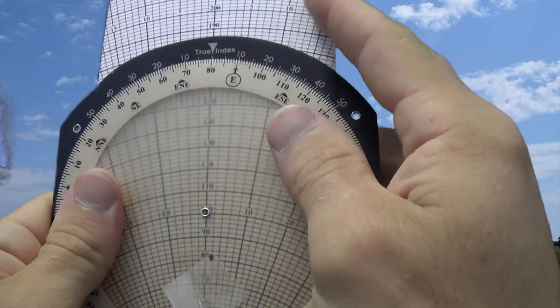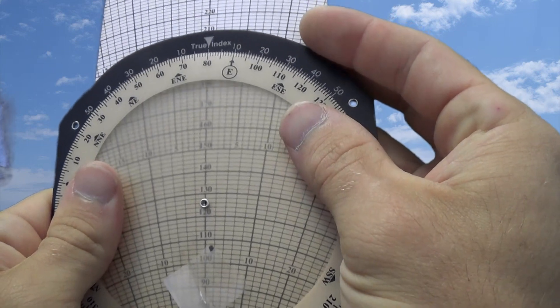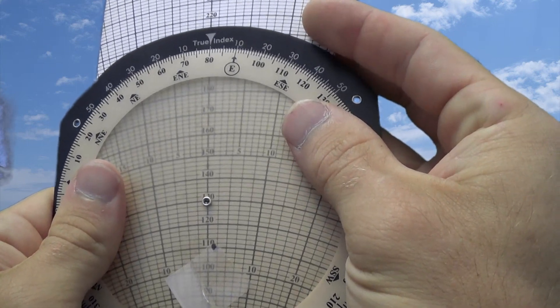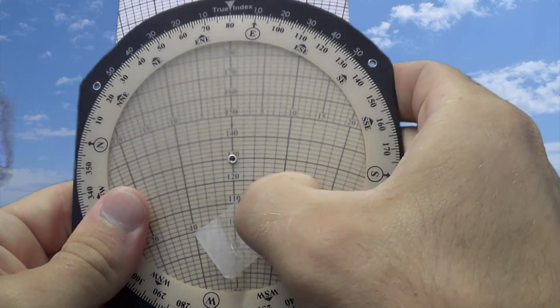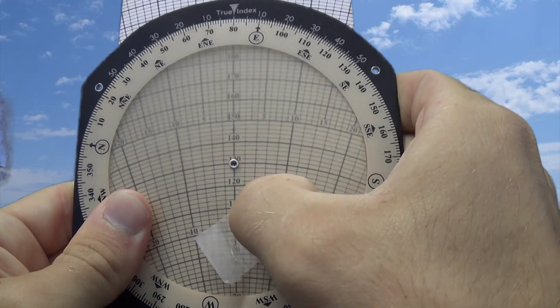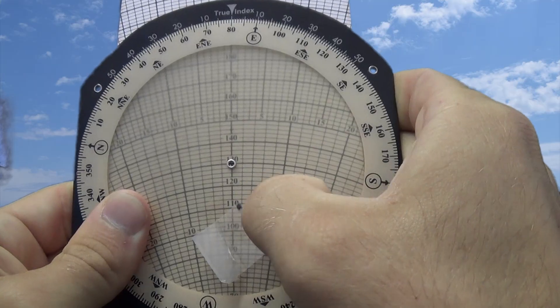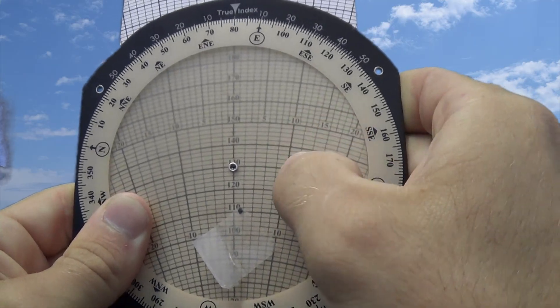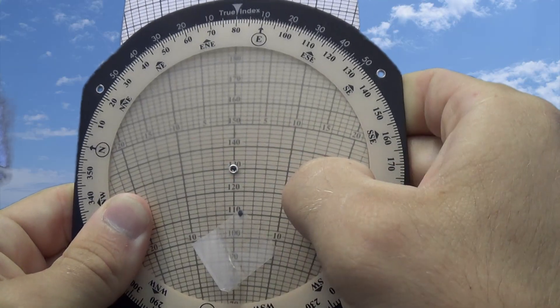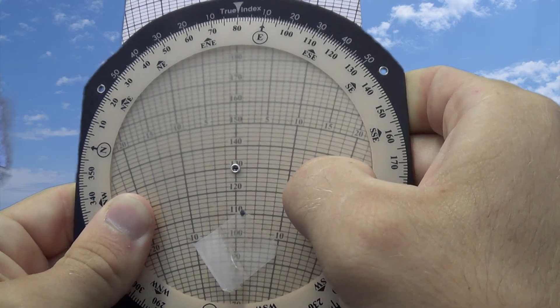We slid this on up to our true airspeed, which was 110, based on our cruise performance charts and everything like that. True airspeed of 110, and we found we'd have to turn 2 degrees to the right to actually have a proper ground track, about adding 2 degrees to 080, and then we read our ground speed through that grommet to be about 129.